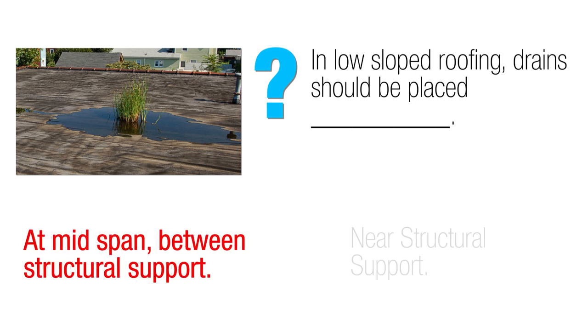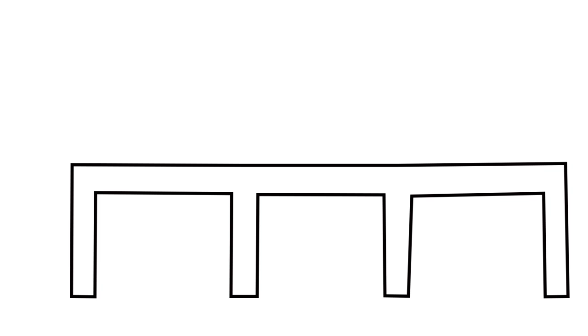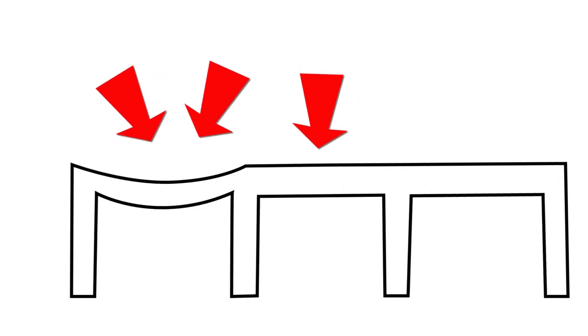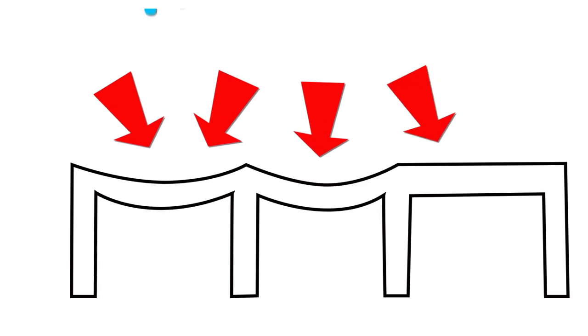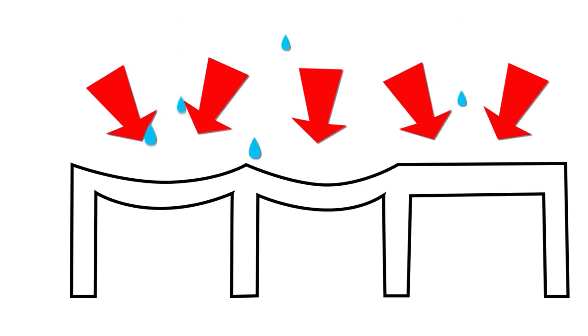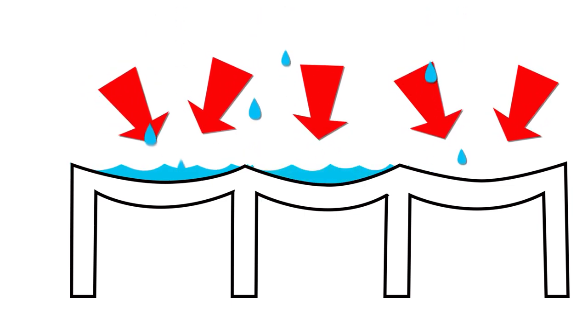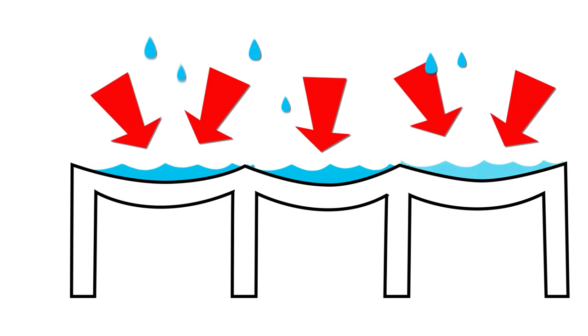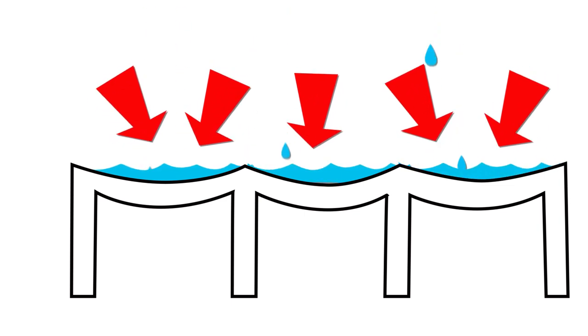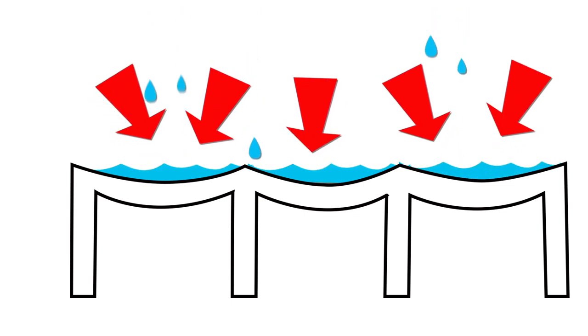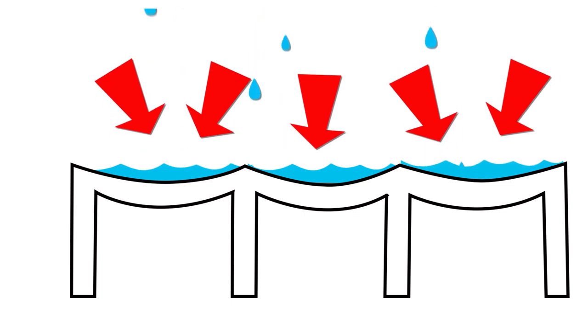The answer is at mid-span, because if you think about the way a roof would deflect under weight, that's likely to be the lowest point over time. Ponding is more likely to occur in long spans due to structural deflection. Once it does, the weight of the water causes more deflection — it's an unvirtuous cycle. The point in the roof gets lower, more water accumulates, and so forth until there's a catastrophic collapse.